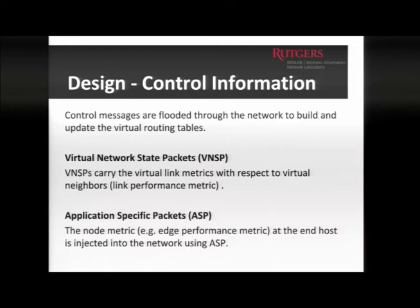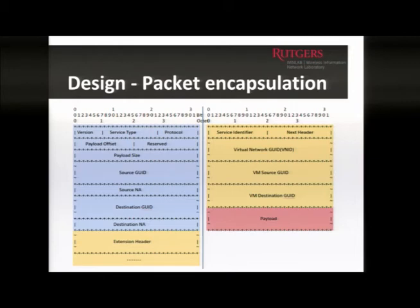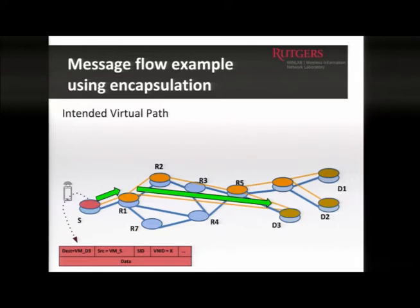To support virtual routing, we introduced additional components: each virtual network has its own virtual forwarding table, distinct from the G-star forwarding table, containing new application-specific metrics. For control information, alongside G-star's link-state packets on the physical layer, the virtual network exchanges virtual network state packets among routers carrying link performance information, and application-specific packets that introduce metrics from the endpoint or application layer.